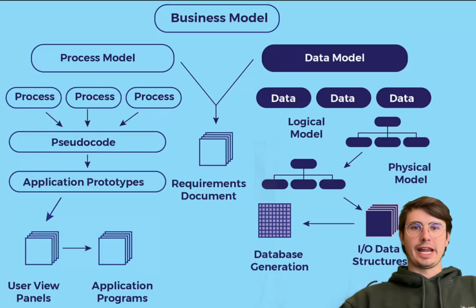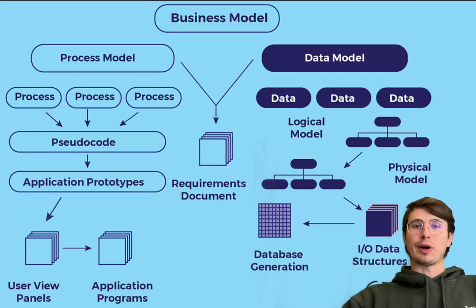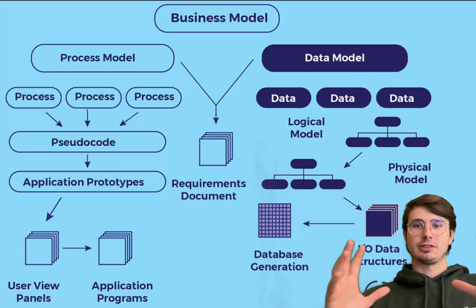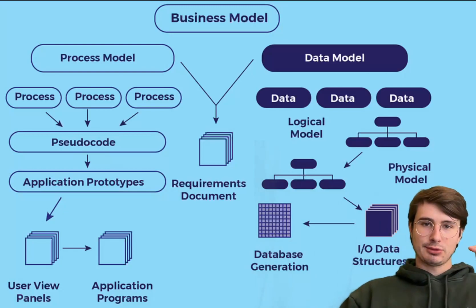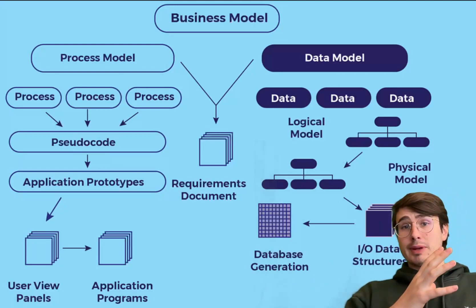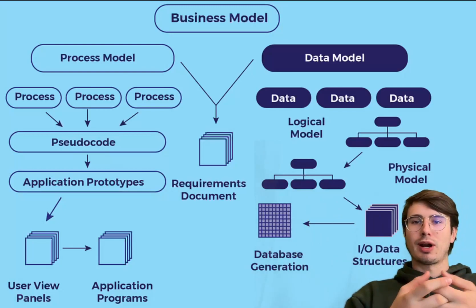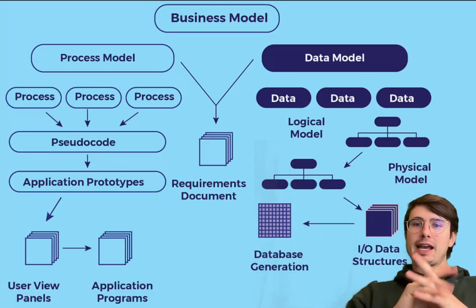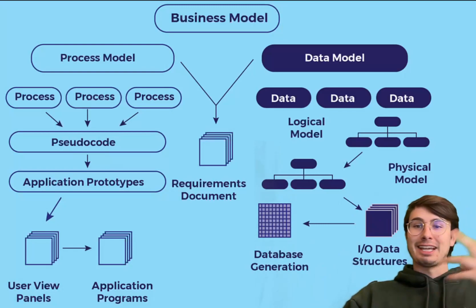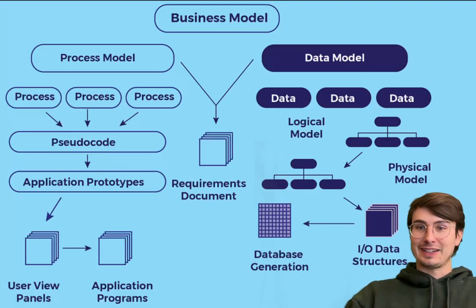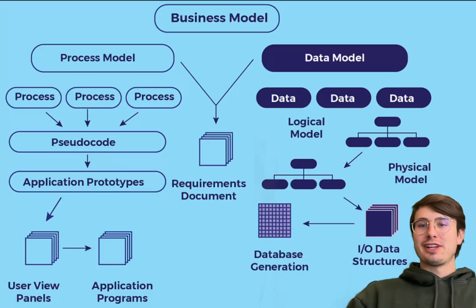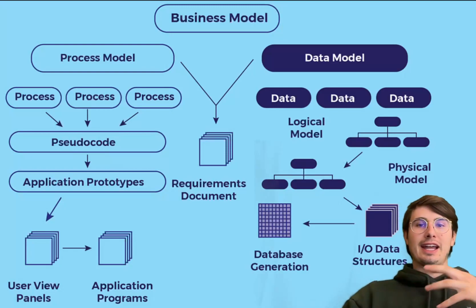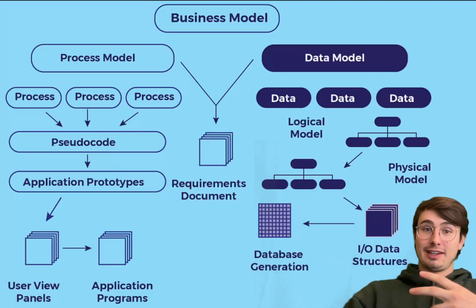The fourth step in the data engineering life cycle is data modeling and warehousing. Data modeling involves designing data schemas that efficiently support both the operational and analytical needs of the business. I have a graph here showing how the process model and the data model need to converge through dialogue with your business team — to design a database that best supports the actual business need. Having efficient database queries just for the sake of it will impress no one outside of other data engineers, so making sure you design a data model in conjunction with the business is crucial.